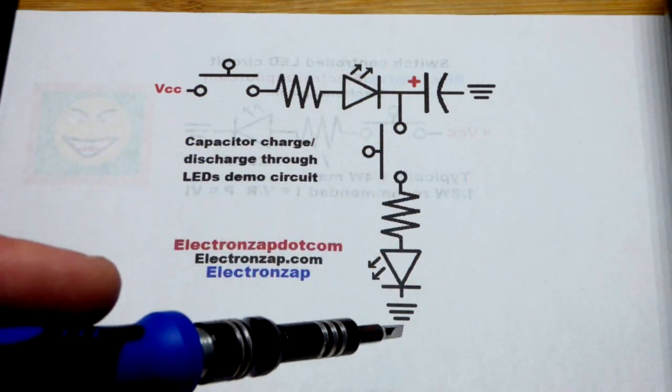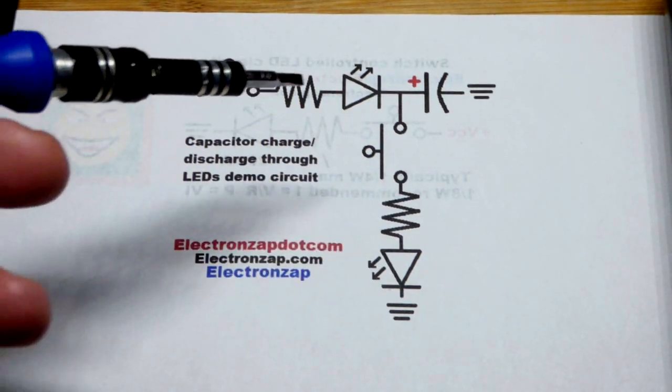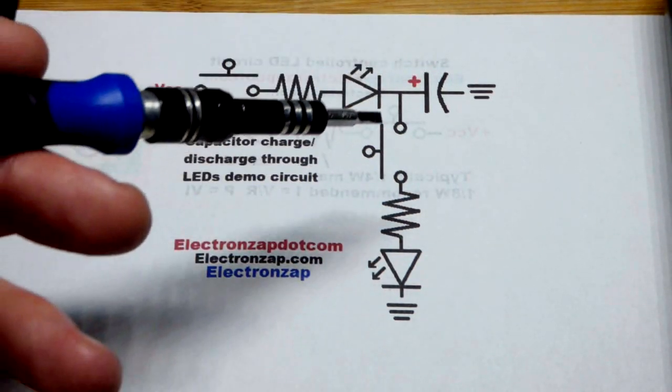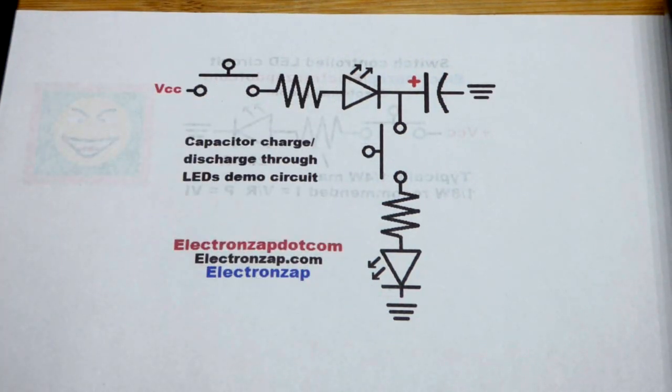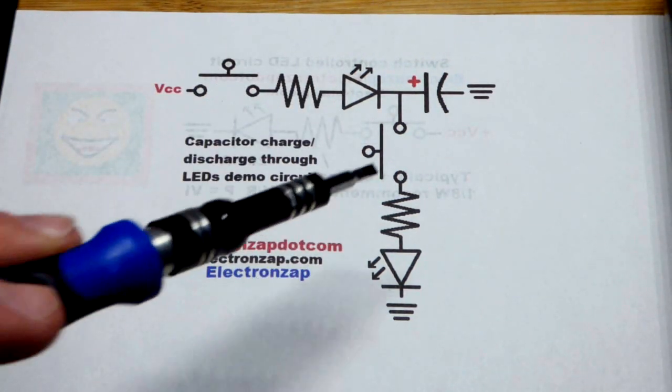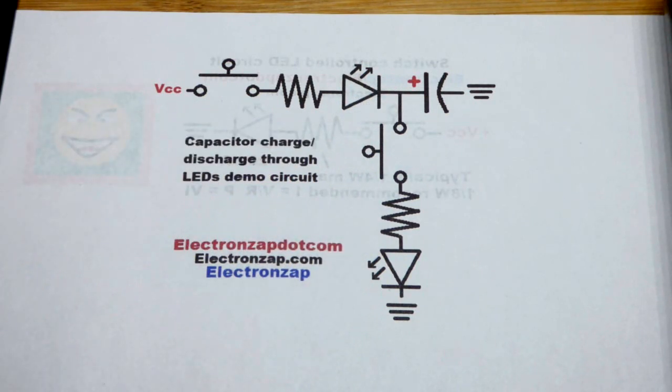So again, we're going to do that through an LED. That way we can see an LED light up while it's charging and see it light up while it is discharging because you can't really see electricity. So it's nice to have LEDs to give you a little indication of when there's current flow.